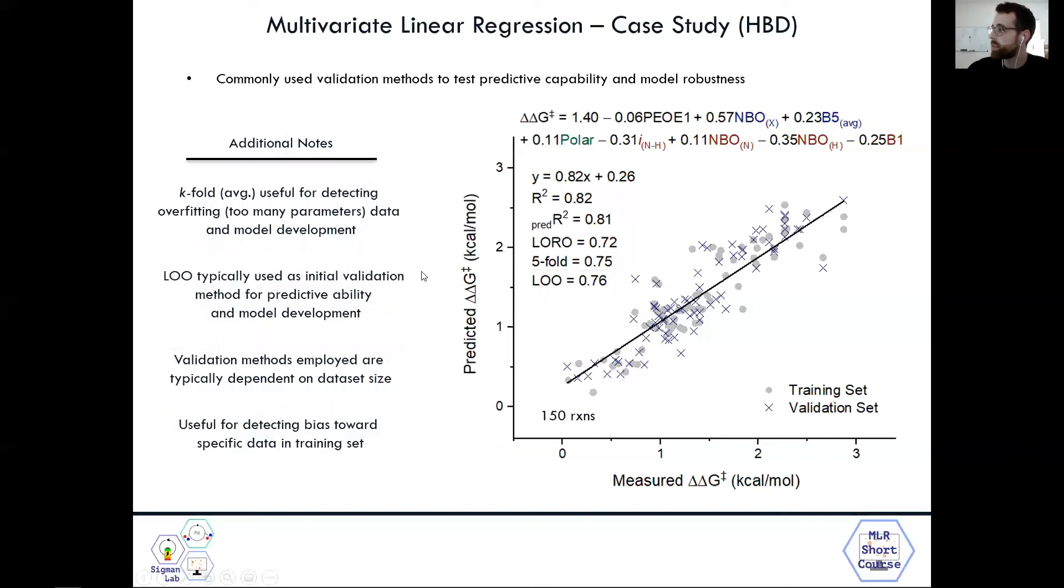So additional notes on these statistical validation methods, K-fold is really helpful in detecting overfitting, which is the case we have too many parameters in the model development stage. And this really occurs when you do the average five-fold and you start seeing some funky numbers show up, such as 0.2, or the range is really high. Sometimes you can get some negative numbers, which really you're essentially breaking the model, which typically means you have too many parameters or your models incapable of predicting validation points pulled out of your full data set.